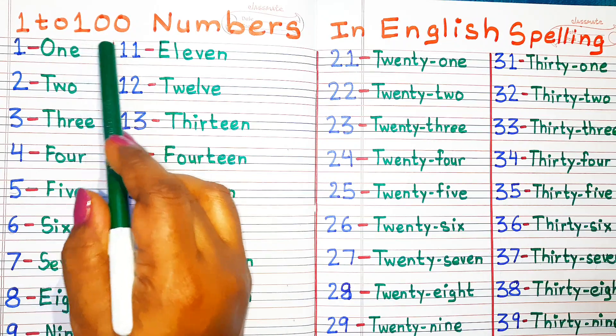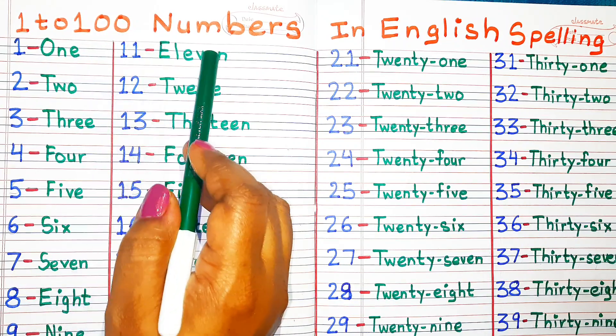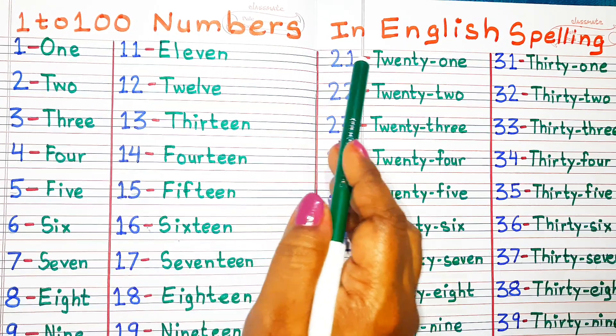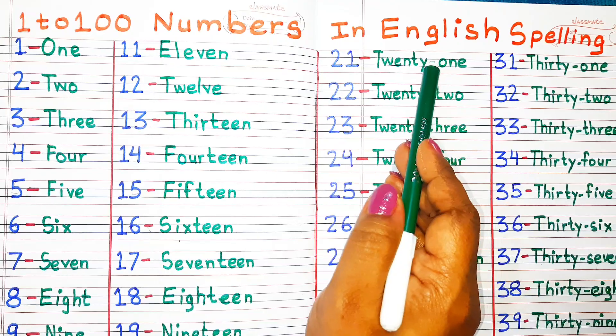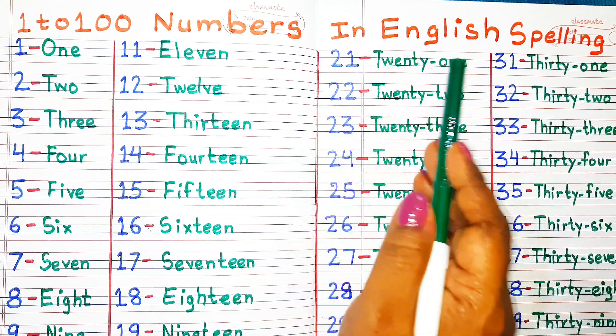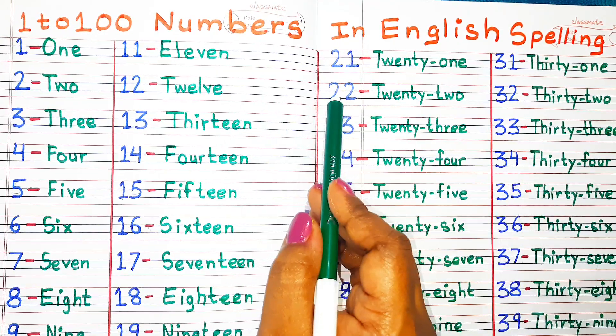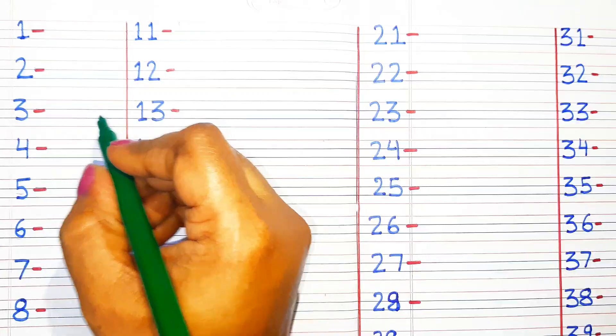1 to 100 numbers. These numbers will be in English with its spelling. So, let's begin.